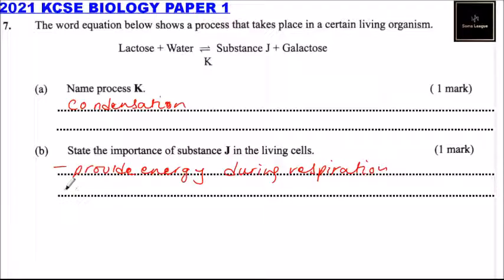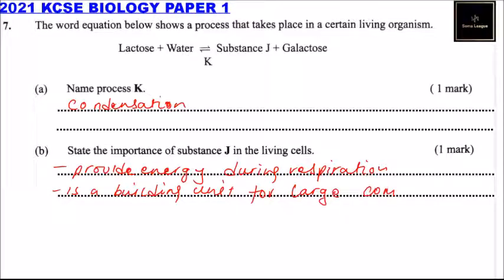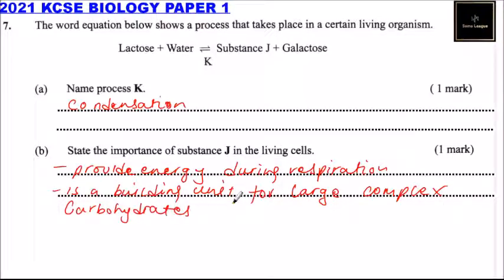Substance J is also a building unit for large complex carbohydrate compounds. By answering that, you'll be able to get two marks.